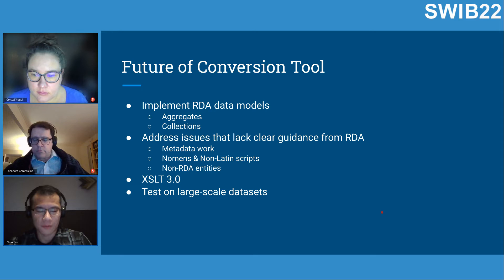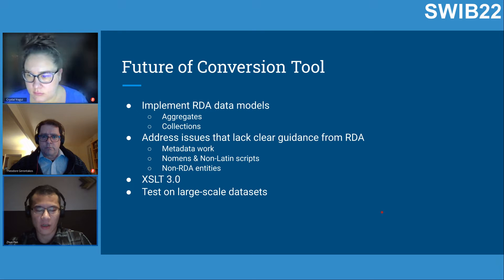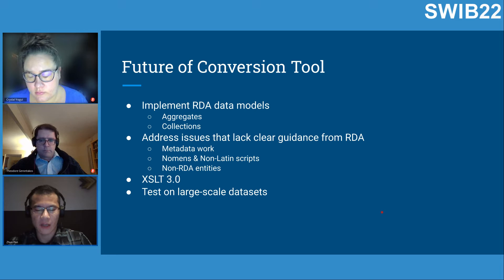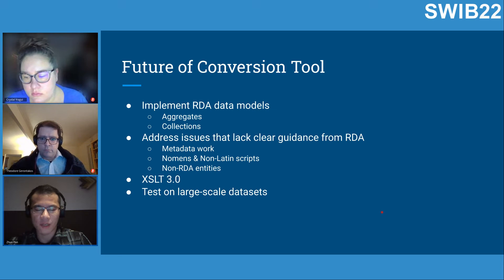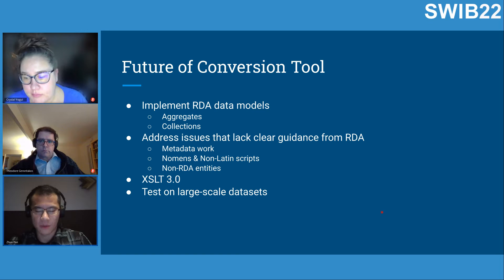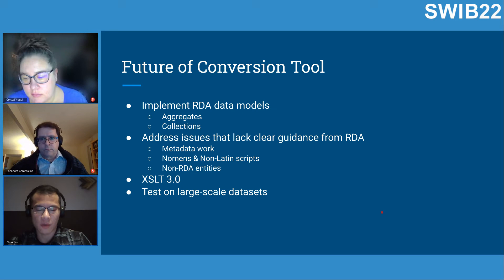Looking ahead, RDA introduces new data models like aggregates and collections that our current code design may not handle well, and we're working on implementing them. We've also discussed extensible issues lacking clear guidance from RDA, like the Metadata Work. Some problems arose with specific MARC subfields — for example, whether to mint nomen entities for non-Latin script data indicated by dollar-six subfield, or how to treat concept IRIs in dollar-zero and dollar-one subfields. For the transformation code, we plan to fully upgrade to XSLT 3.0, especially for document streaming capabilities on large-scale MARC datasets.